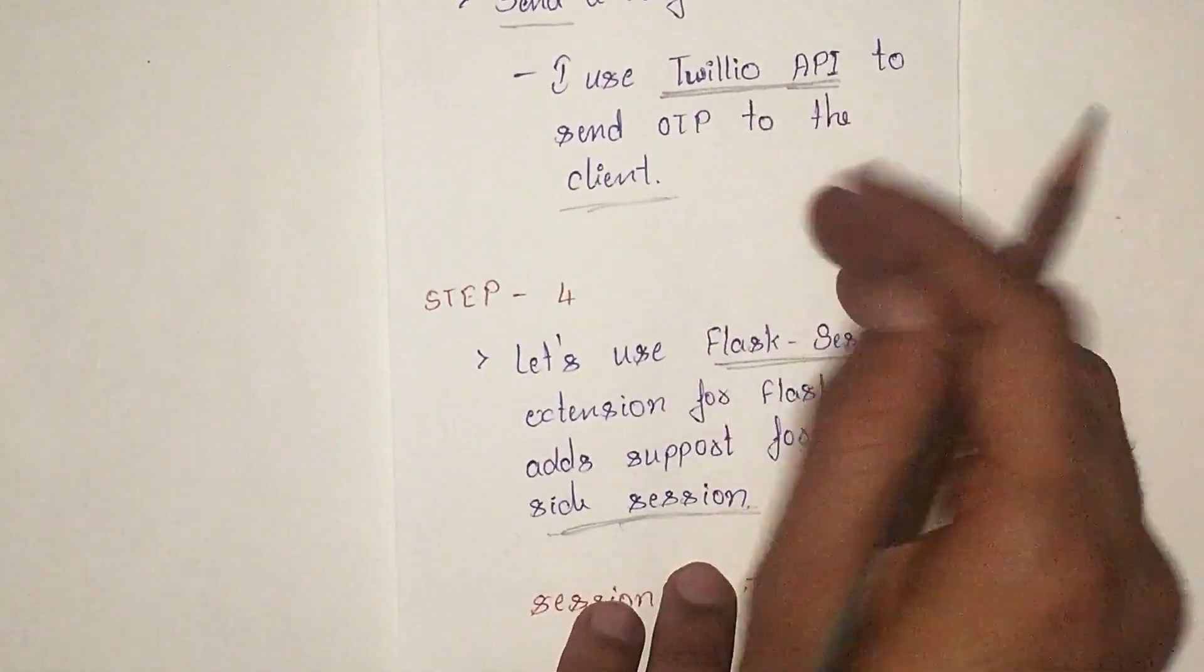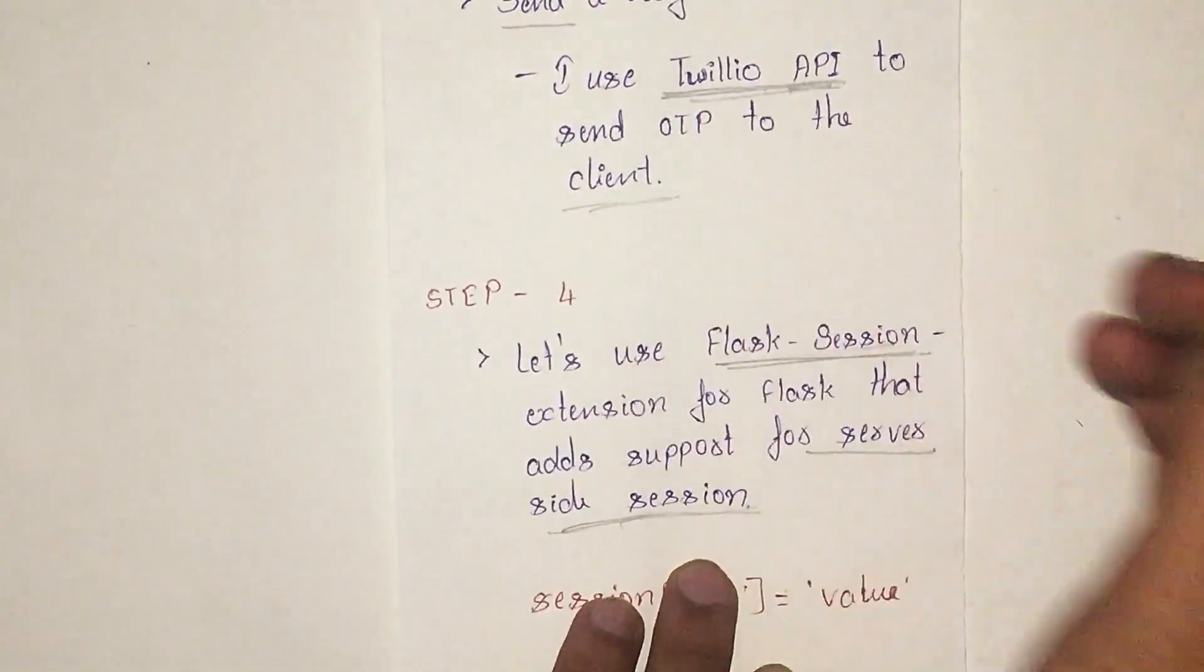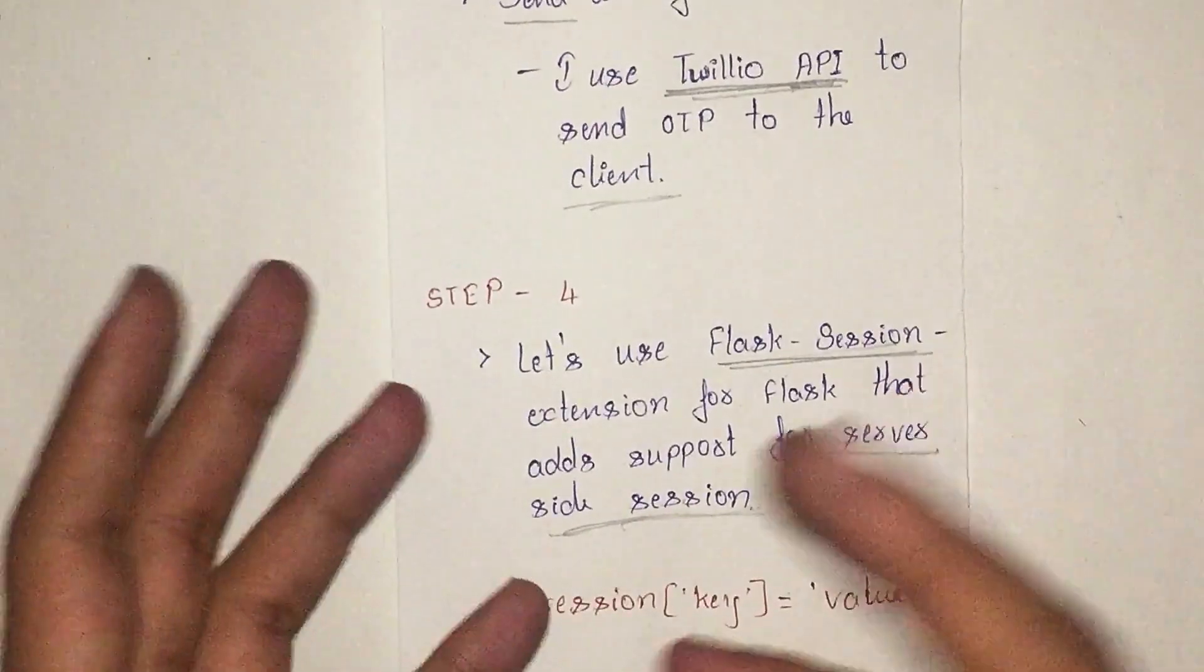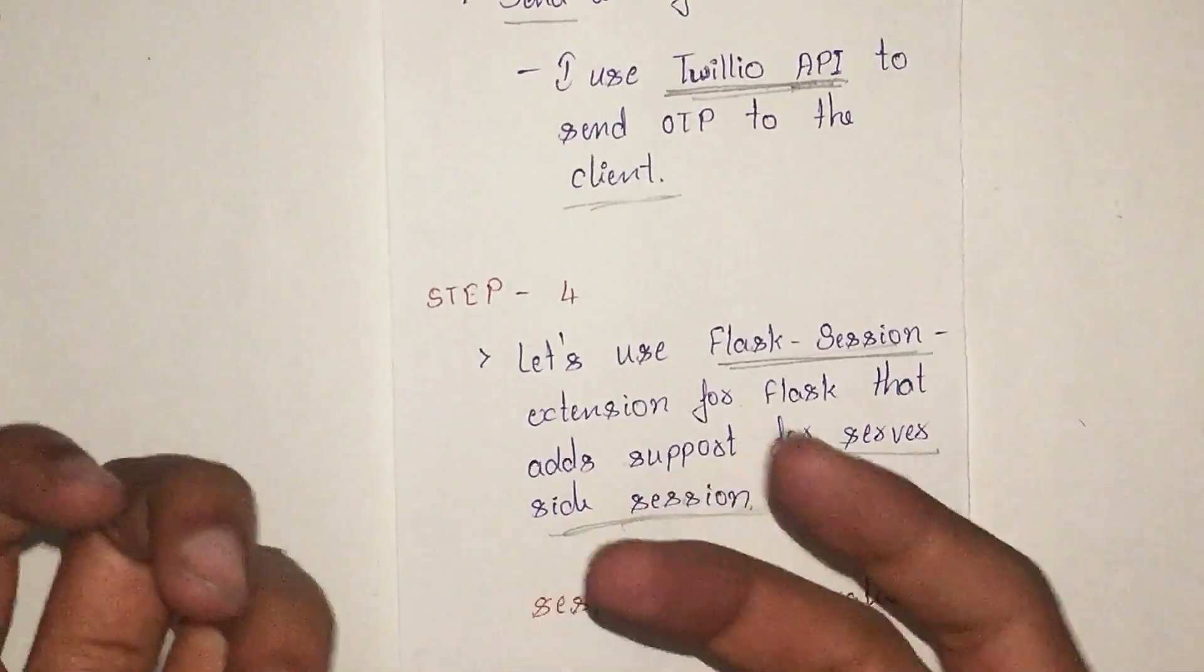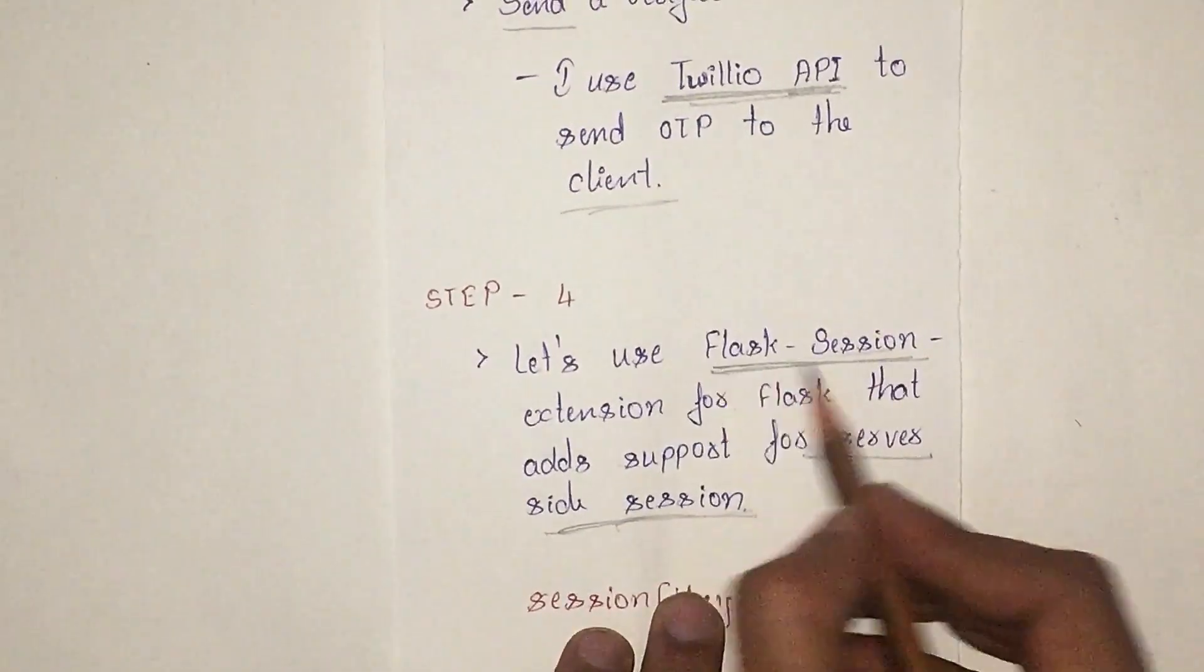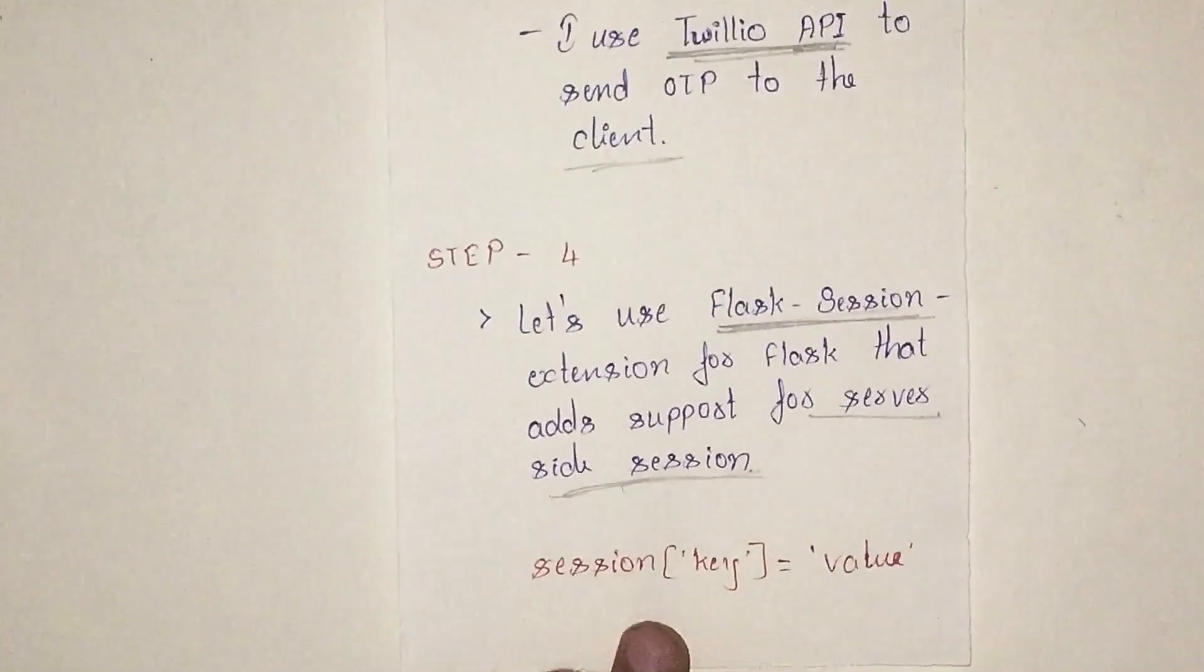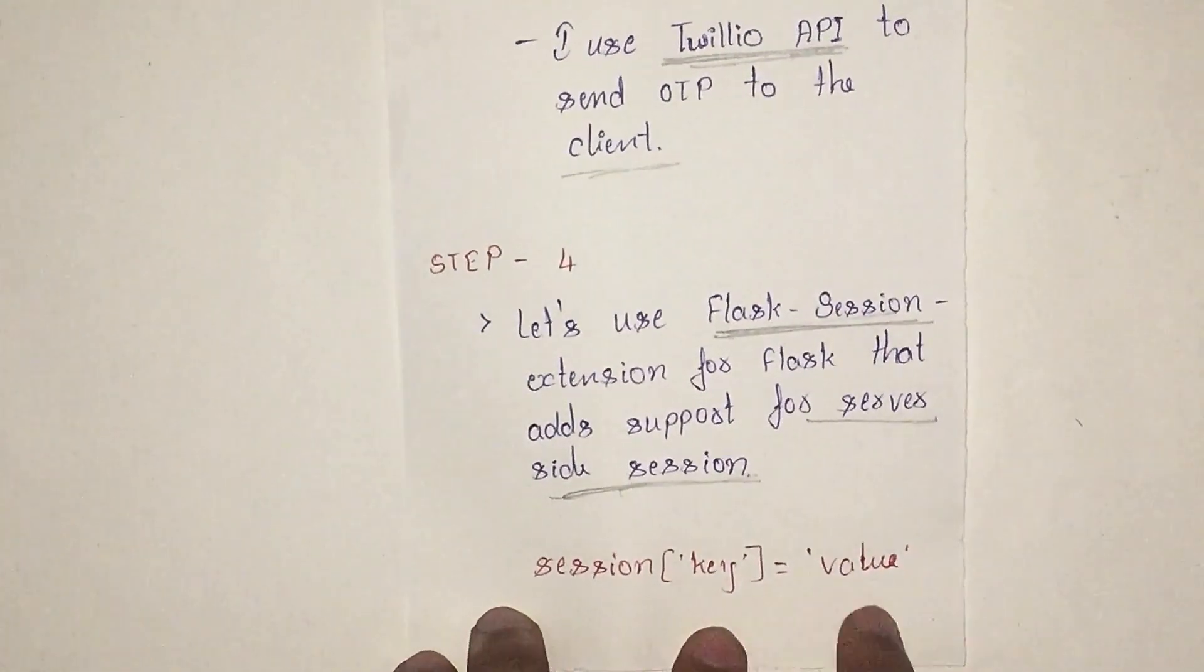It stores this sensitive information that is sent from Twilio or the OTP that we generated and sent through Twilio. Instead of storing in the client session where they can access through the console, we are going through this Flask session extension. This is how we do it: session['key'] equals to the value. We will see this in details when we are doing hands-on.